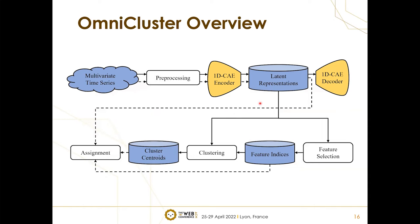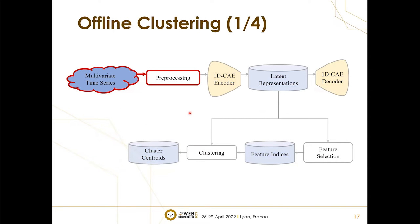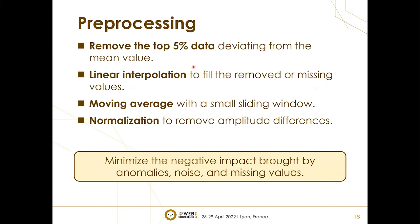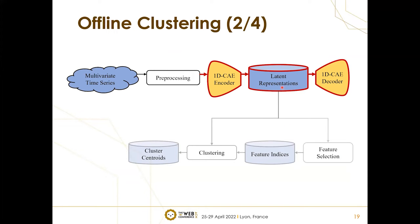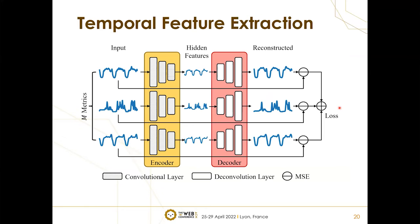The overall architecture of Omni-cluster is illustrated in this figure. Omni-cluster consists of two major stages: offline clustering and online classification. The offline clustering stage consists of four steps. The first step is preprocessing, where Omni-cluster does extreme value removal, linear interpolation, data smoothing, and normalization to minimize the negative impacts brought by noise, anomalies, and missing values. The second step uses 1DCAE to reduce the temporal dimension and capture temporal features. The encoder in 1DCAE is composed of 1D convolutional layers with independent parameters. Each metric in MTS is input into a different 1DCAE in the encoder to extract corresponding features. Omni-cluster continuously updates the model by minimizing the reconstruction loss between the input and the output.